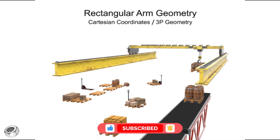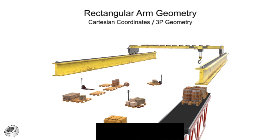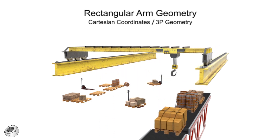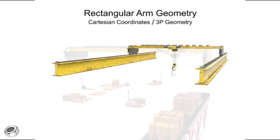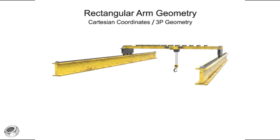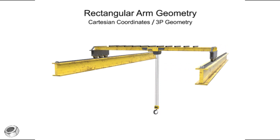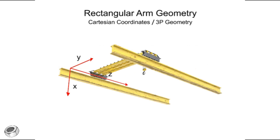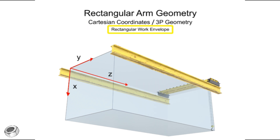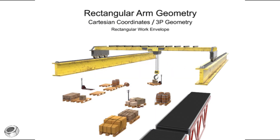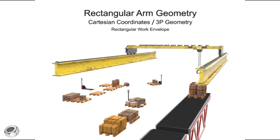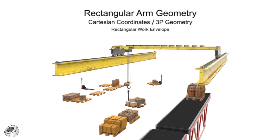Rectangular arm geometry robots can only move linearly in each direction. An overhead crane robot is a good example of this type of motion — it can move forward and backward, left and right, and up and down. Robotic arms that use Cartesian coordinate geometry generate a rectangular work envelope. Rectangular robotic arms have the simplest geometry and control system and are typically used in material handling operations.